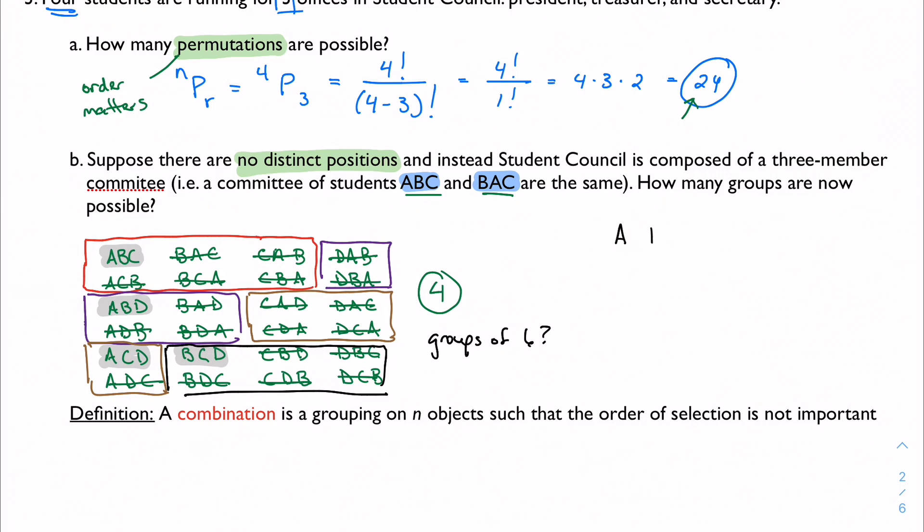So how did we get these groups of six? This is interesting. Well, because we want to eliminate all of the possible ways I can arrange A, B, and C. And how many permutations of A, B, and C are there? Well, it's 3 factorial, and that's 6. So I'm eliminating all the duplicates, and that's the way I do it.